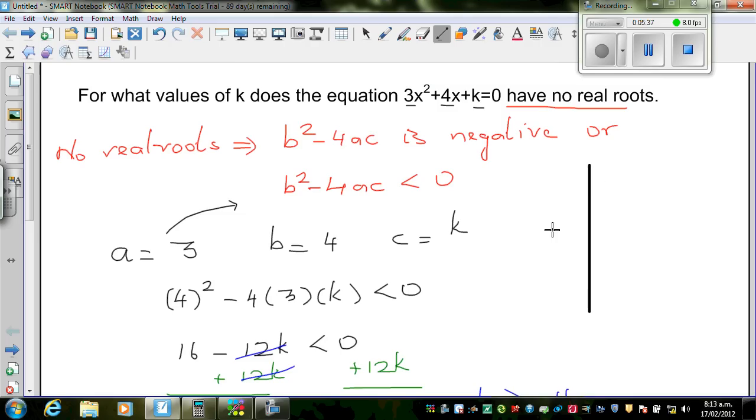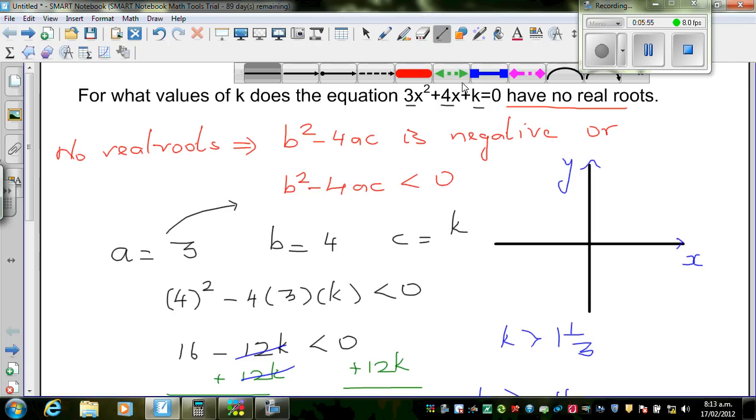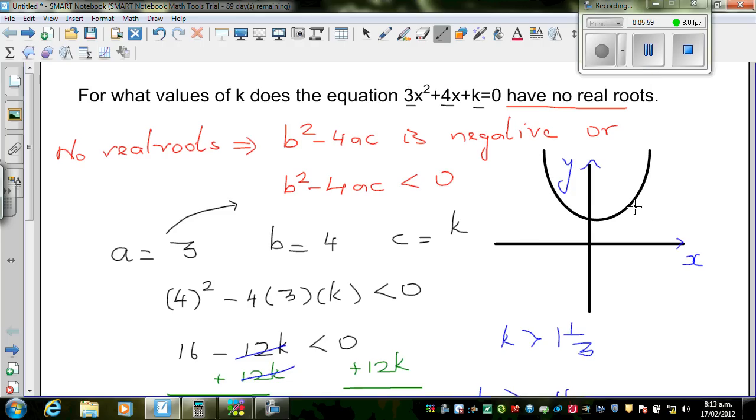This generally means, suppose if k is greater than 0, so this is your y-axis and this is your x-axis. If you want to express this graphically, if k is greater than - you take any value k is greater than 1 and 1/3 - your parabola, say this is my parabola, it will look somewhat like this. Anywhere, or it can also go the other way around upside down. In short, it will not intersect the x-axis at any point.